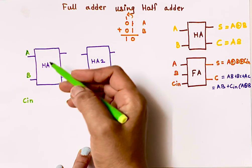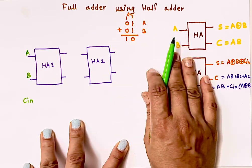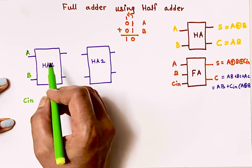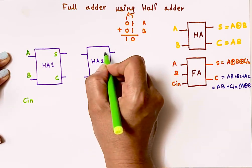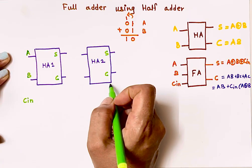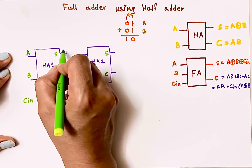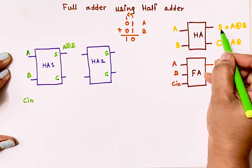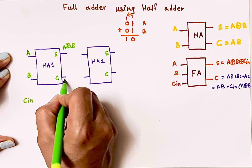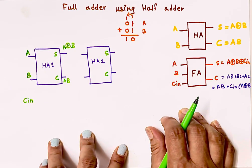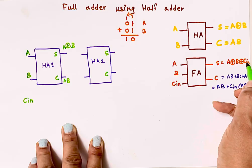Here is my first half adder and my second half adder. We are designing a full adder using half adders. In the first half adder, inputs are A and B. The sum output is A XOR B and the carry output is A·B.